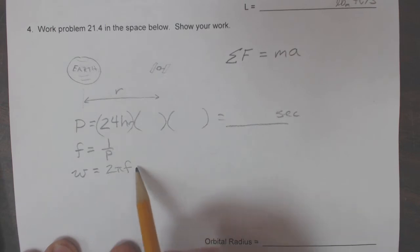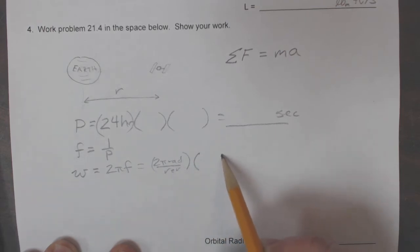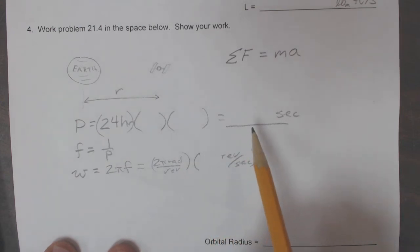And remember that what you're doing here with the 2π is 2π radians per revolution times the frequency, which will be in revolutions per second. I imagine this will be a fairly small number, just based on the fact that this will be a big number right there.